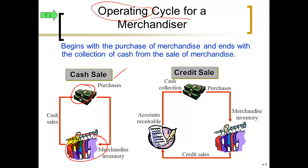The time it takes to go around this so-called cycle is called one operating cycle. You have to make sure you have enough adequate variety to satisfy your customers; otherwise they'll go to somebody else. Now if you sell on account or on credit, you still have merchandise sitting on the shelf that you have to buy and replenish. But when you sell, you don't collect the money right away. You bill your customers, have a receivable, and wait to collect. The time the money flows around this cycle is called one operating cycle.